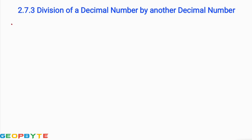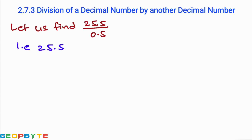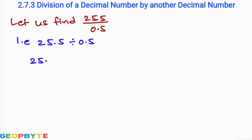Hello students, welcome to GEObyte. In the previous video we discussed about division of a decimal number by a whole number. Today let us discuss about division of a decimal number by another decimal number. Let us find 25.5 divided by 0.5.